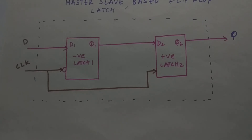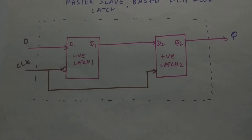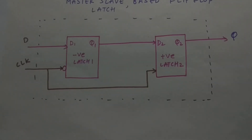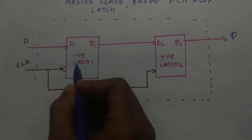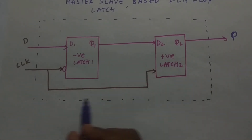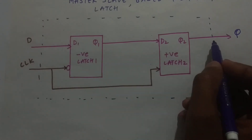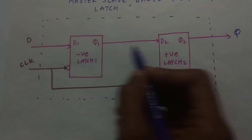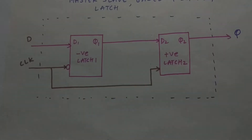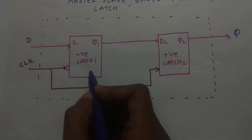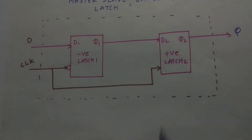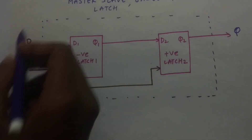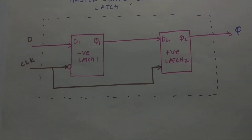Before going to the setup time and hold time of a flip-flop, let us design a flip-flop using two latches — a master and slave latch. As you can see in the diagram, here is a setup of latches where we will get a flip-flop. We have a negative latch and a positive latch. The input is given at D and the output is taken at Q. The input of the positive latch is given from the negative latch, and the clock is inverted for the negative latch whereas it is not inverted for the positive latch. So this whole system acts as a D flip-flop.